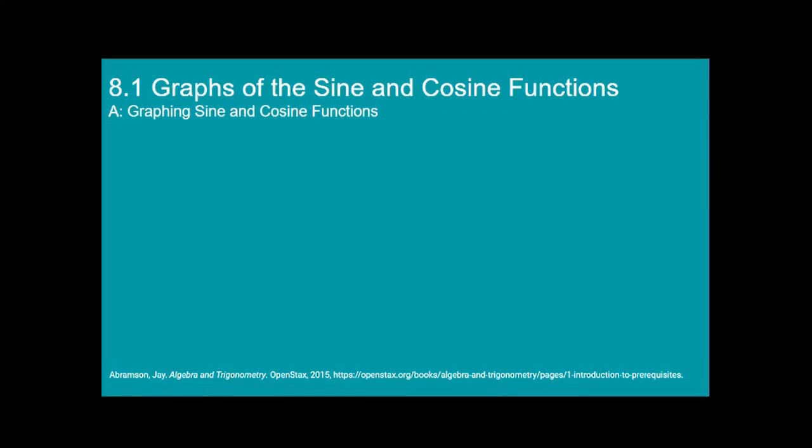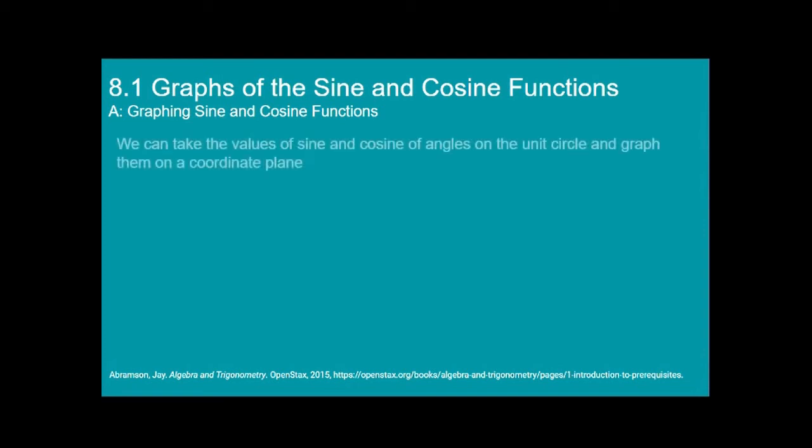This is 8.1a graphing sine and cosine functions from OpenStax Algebra and Trigonometry. This is going to be a little bit of review from the assignment that you did the other day, but I really want you to understand how this works. So let's go ahead and look at what you did before.